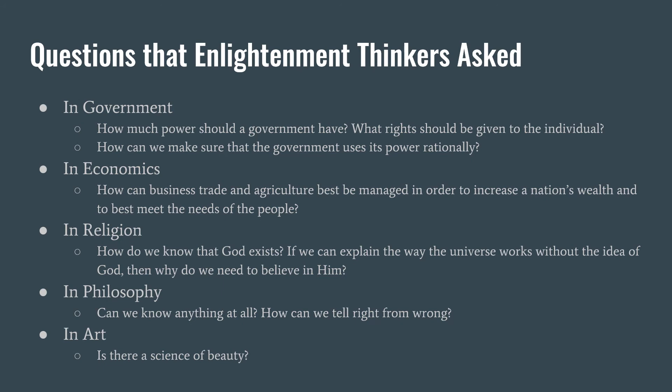In their quest to discover the laws that govern humankind, Enlightenment thinkers began to ask many questions about society. For the field of government, they asked: how much power should a government have, and what rights should be given to the individual? How can we make sure that the government uses its power rationally? We'll see that many ideas currently found in the United States are derived from Enlightenment thinkers and Enlightenment ideas.